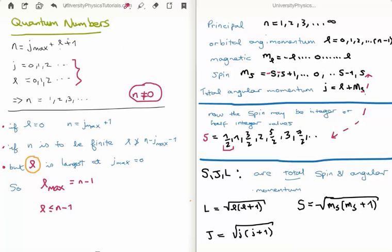Now both L and J start at 0 and go to infinity in integer steps. So this implies that N is non-zero. Because for example, if you plug 0 into both of these, you find that N is equal to 1.